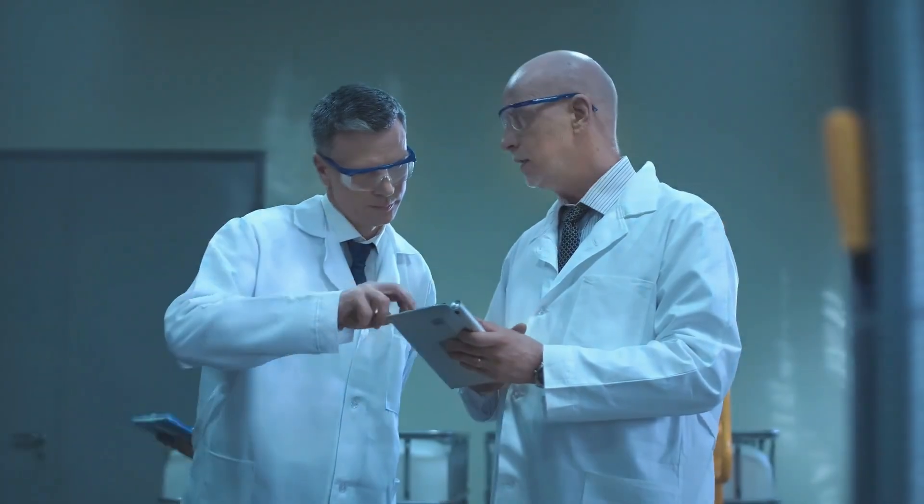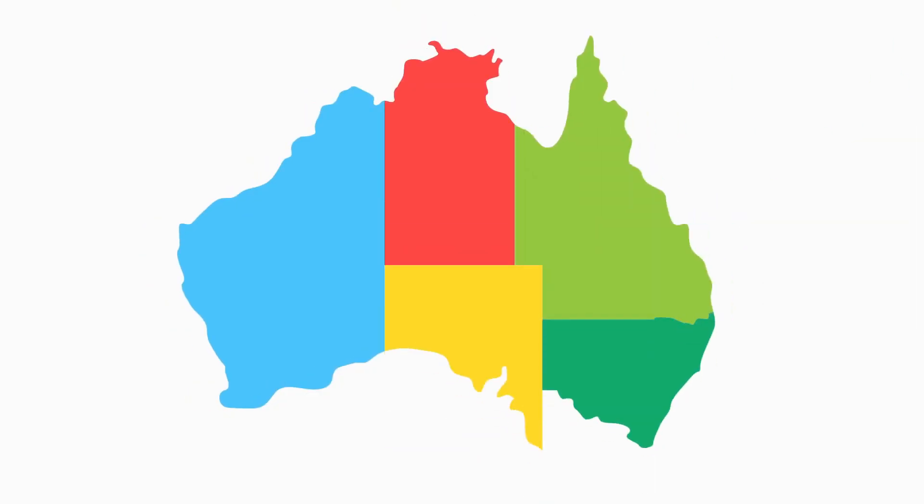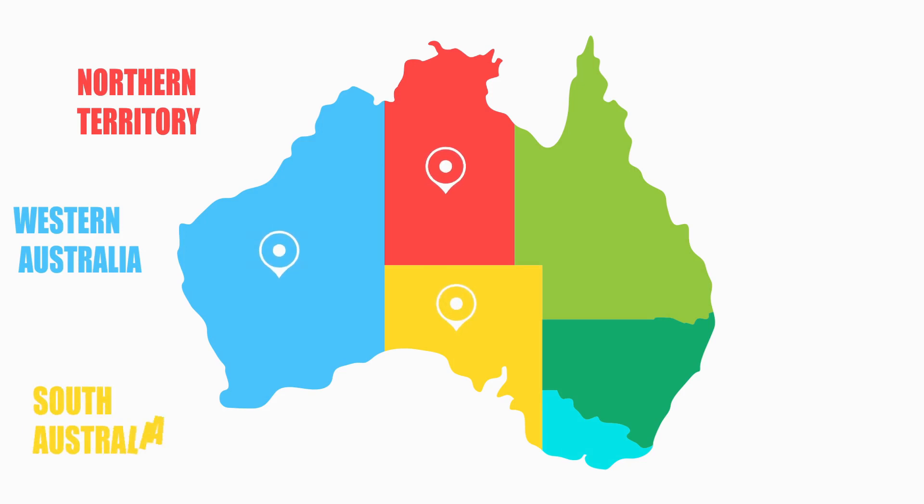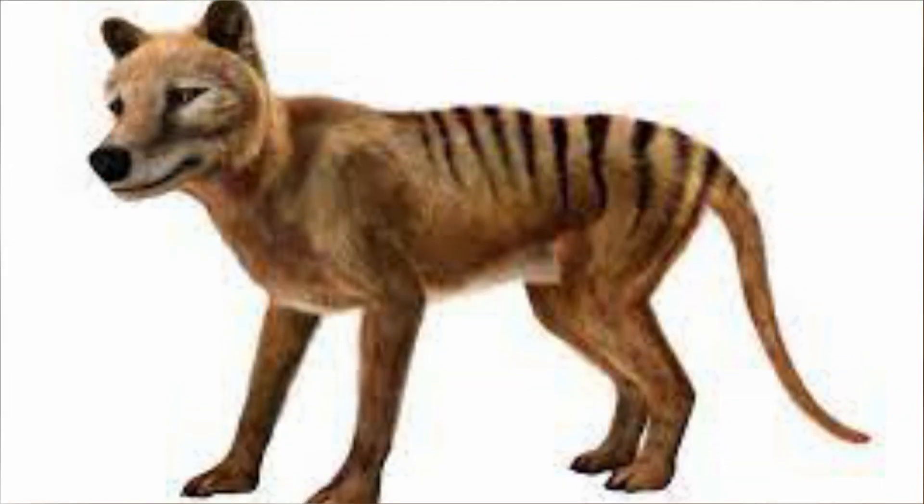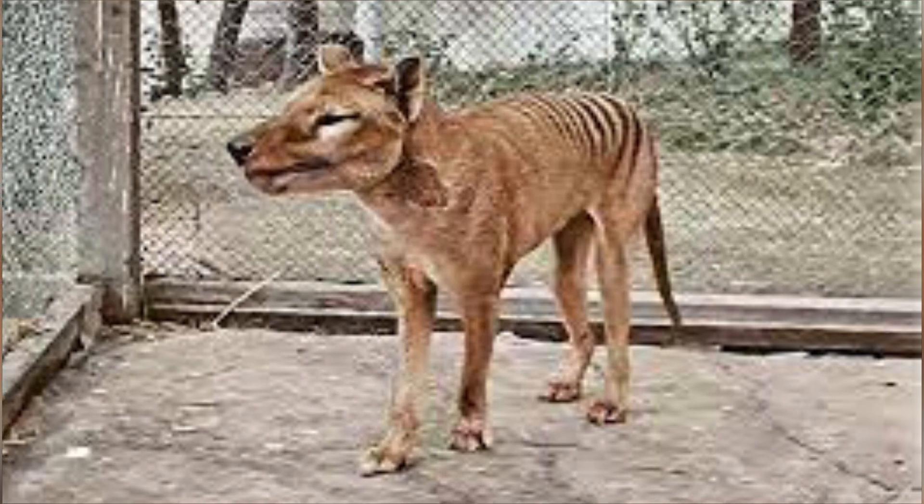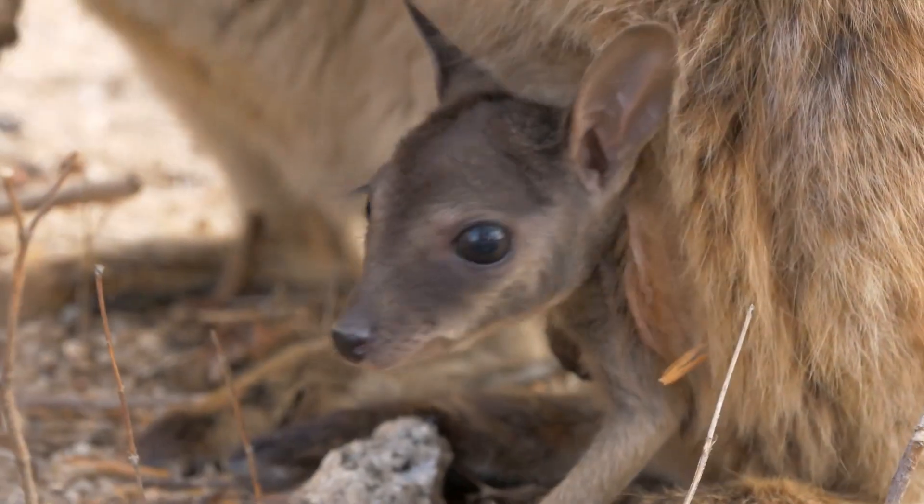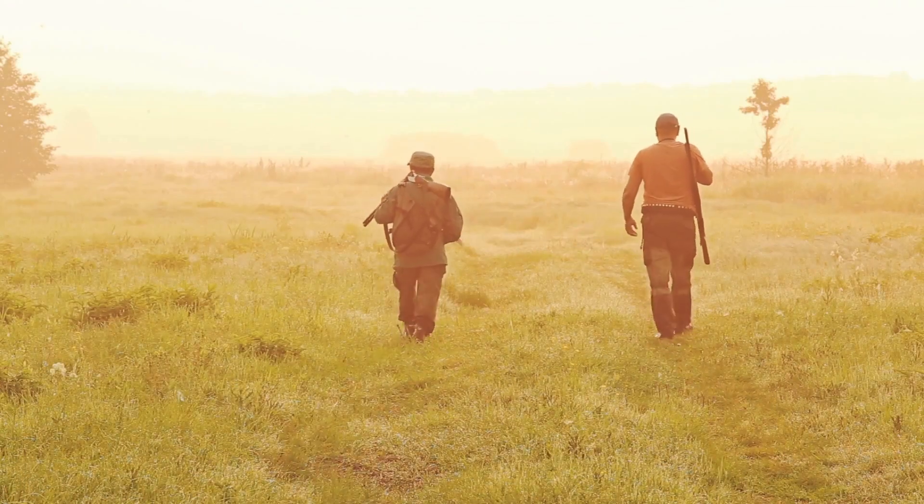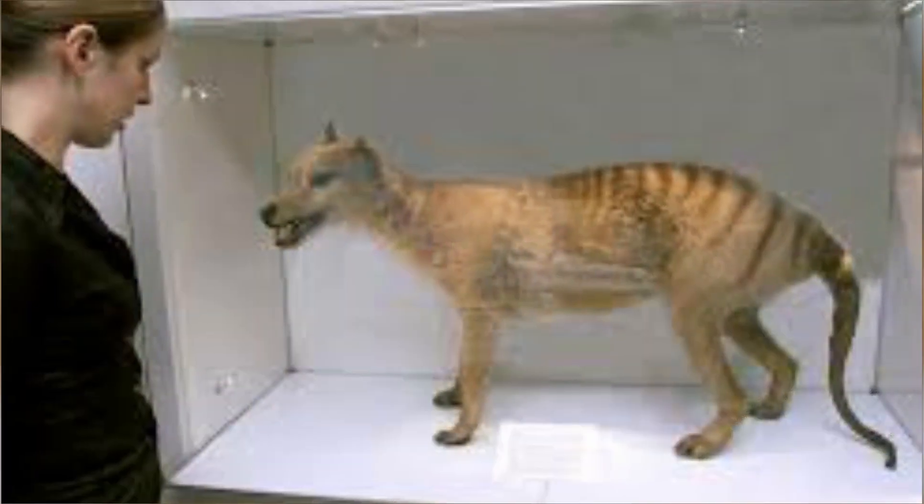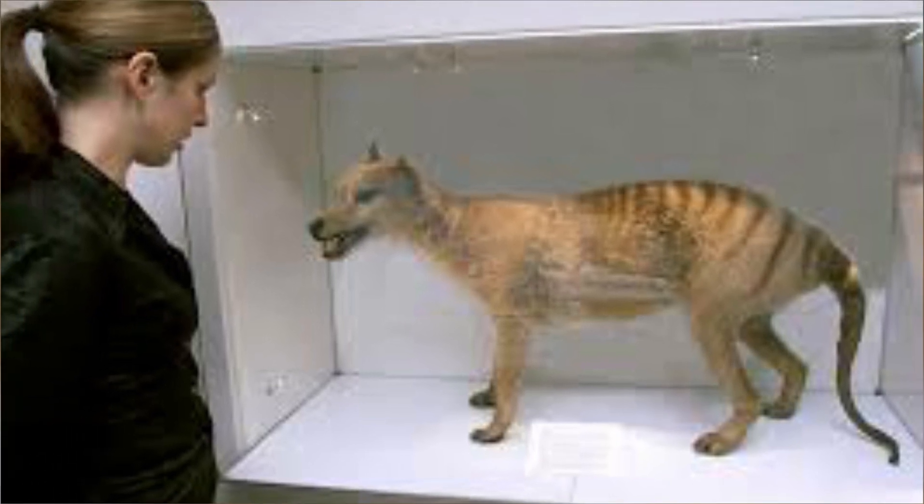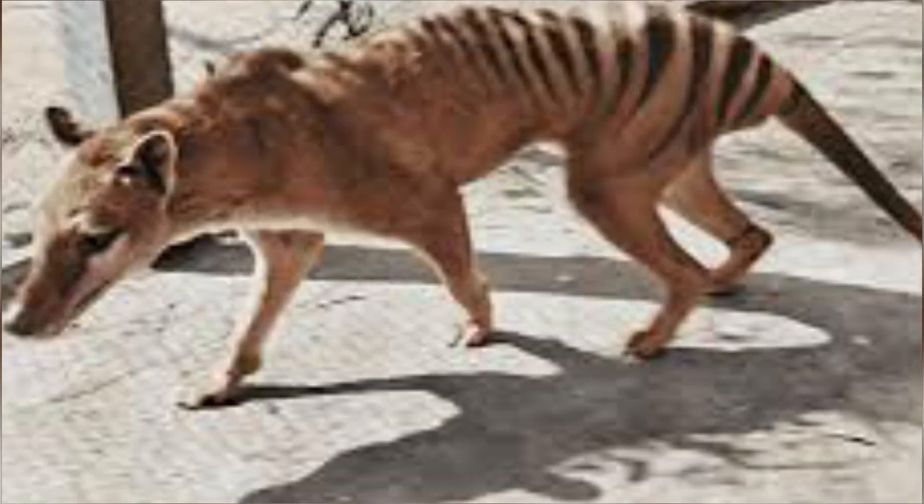Thylacines were native to Australia, Tasmania, and New Guinea. They were the largest modern carnivorous marsupial and contained distinct features: structured like a dog, stripes on the lower back, and a pouch like a kangaroo. Sadly, humans hunted Tasmanian tigers to extinction, with the last living one perishing nearly 80 years ago at Tasmania's Hobart Zoo in 1936.